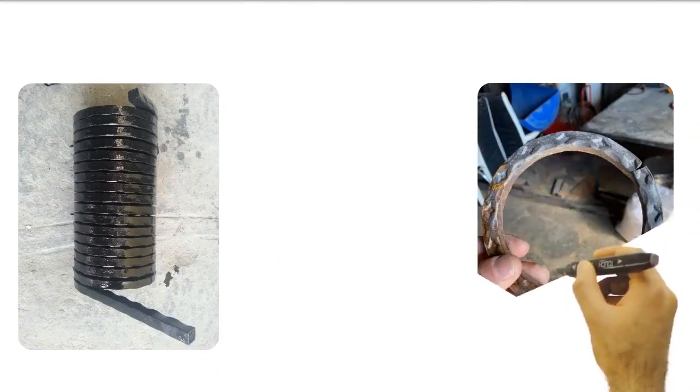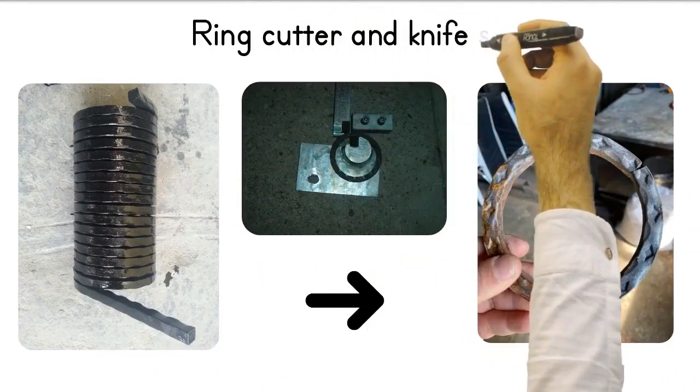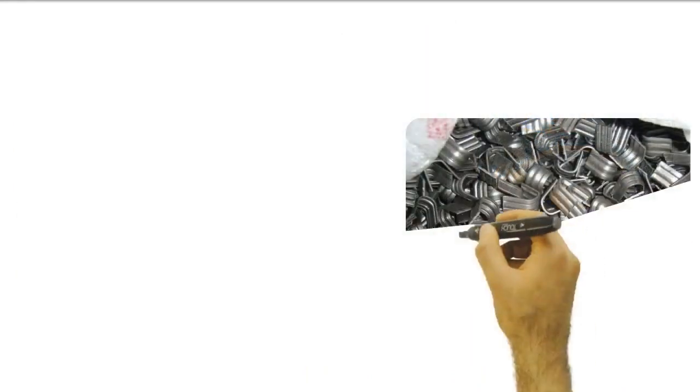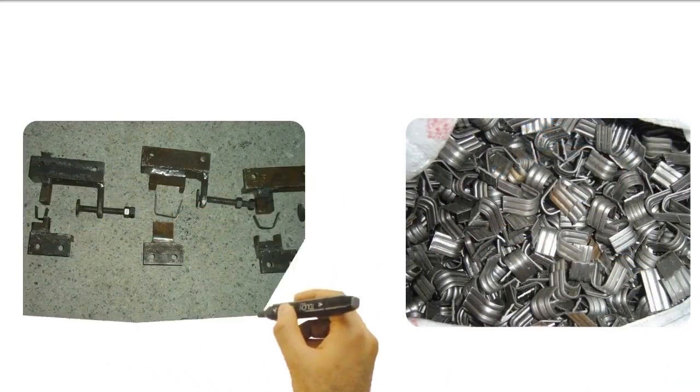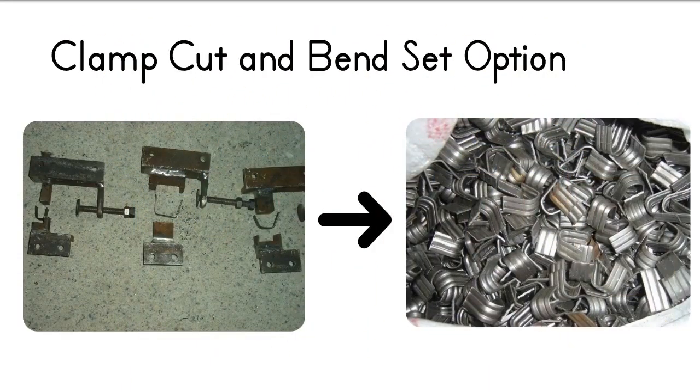Another mold we can offer as an option is the ring cutting apparatus and knife set. We also offer the necessary die set as an option so you can cut traced wrought iron clamp strips in the automatic stop system.